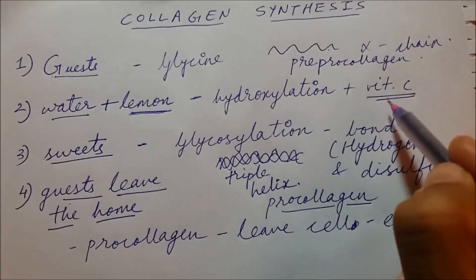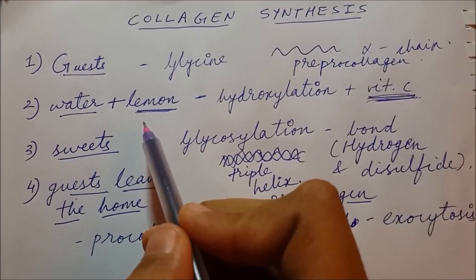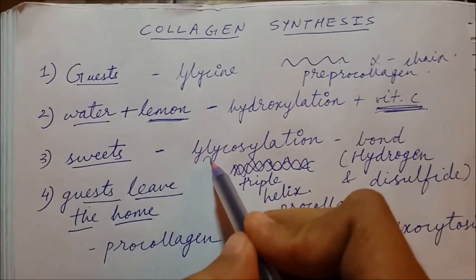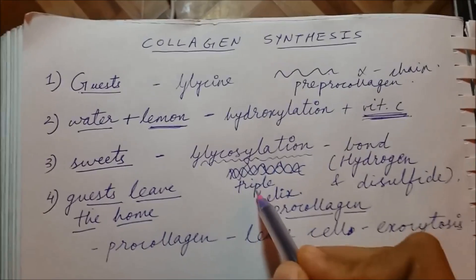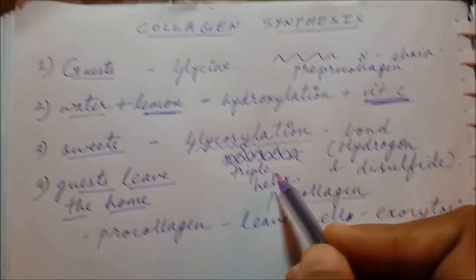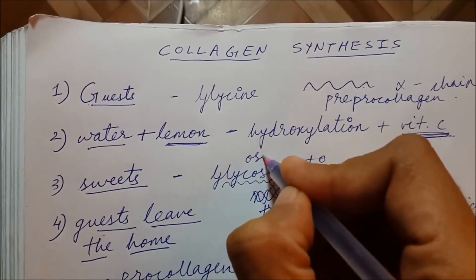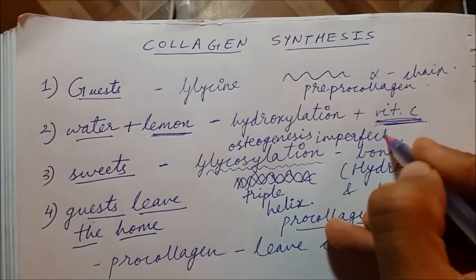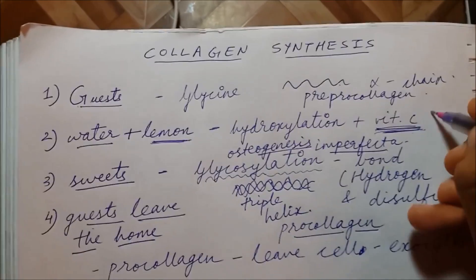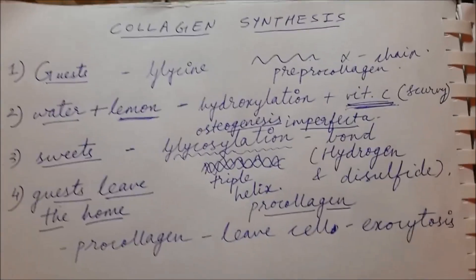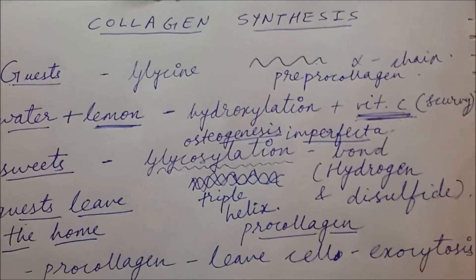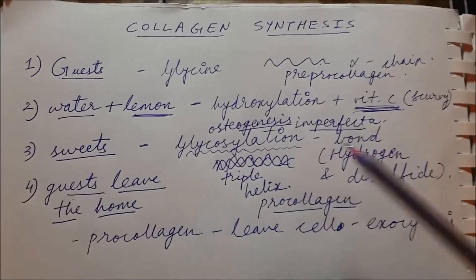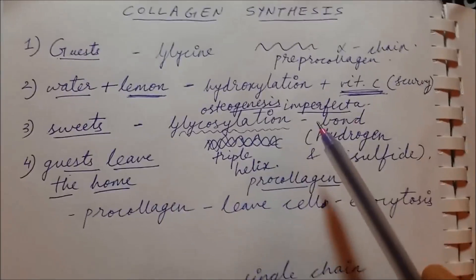A highly tested point: vitamin C deficiency causes a defect in hydroxylation, leading to scurvy with bleeding and related symptoms. Another high-yield point: if there is a problem in glycosylation, there will be a defect in forming the triple helix — seen classically in osteogenesis imperfecta. These steps are frequently tested on USMLE Step 1.